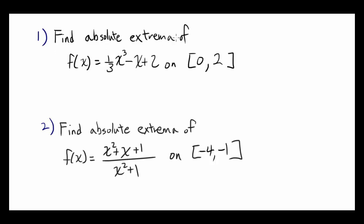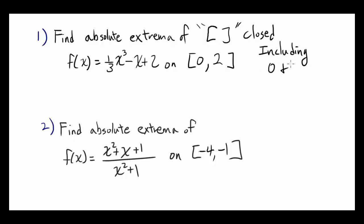Find absolute extrema of f(x) = (1/3)x³ - x + 2 on the closed interval [0, 2]. These brackets mean that this is a closed interval as opposed to an open interval, meaning we are including the endpoints — in this case 0 and 2. If this were the open interval (0, 2), we would not be including 0 and 2, so we'd only look for extrema strictly in between.